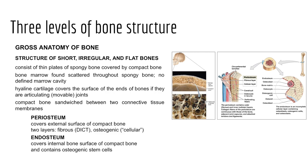Two important connective tissue membranes are the periosteum and endosteum. Periosteum covers the external surface of compact bone — similar to how perichondrium covers cartilage. The prefix peri means surrounding. The periosteum has two layers: a fibrous outer layer of dense irregular connective tissue, and an osteogenic inner layer holding bone cells including osteoblasts. Endosteum covers the internal bone surface and houses osteogenic stem cells. Endo means within, so it's found on the inner surface.